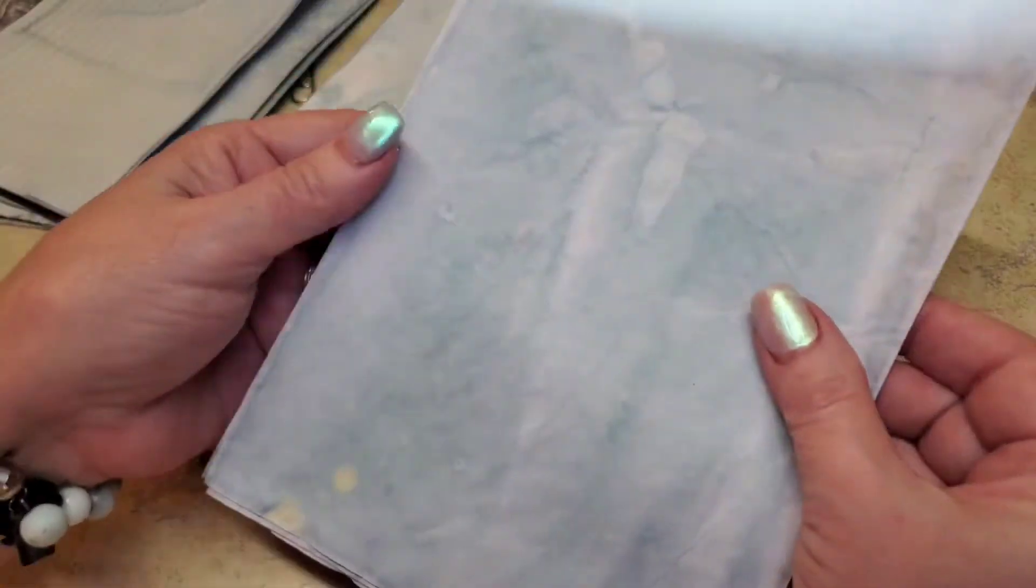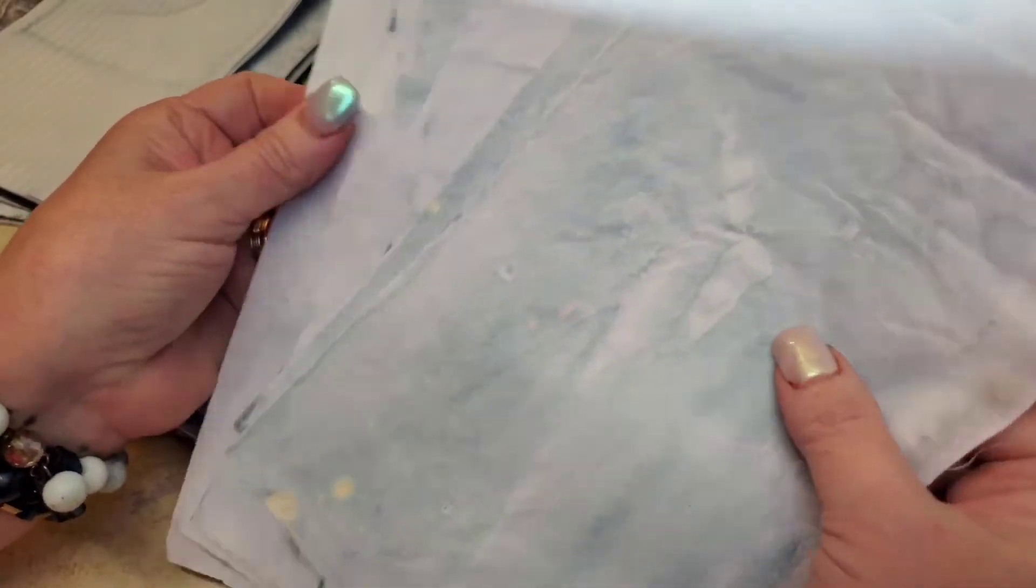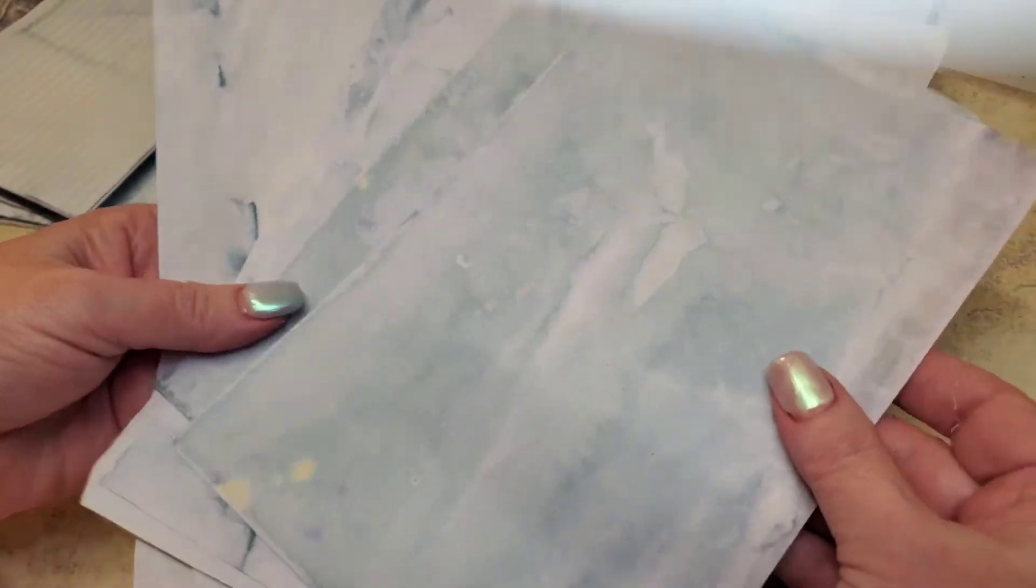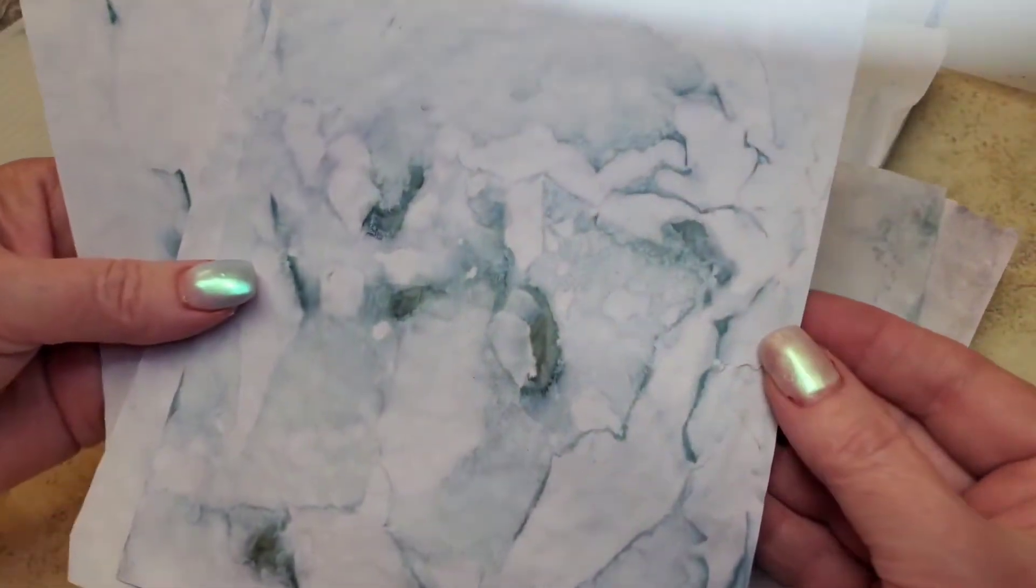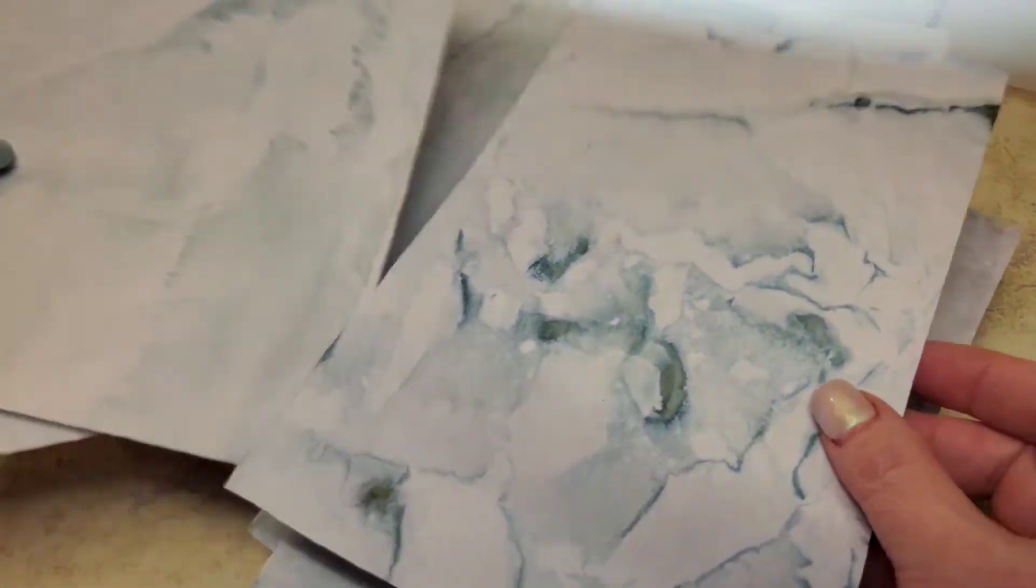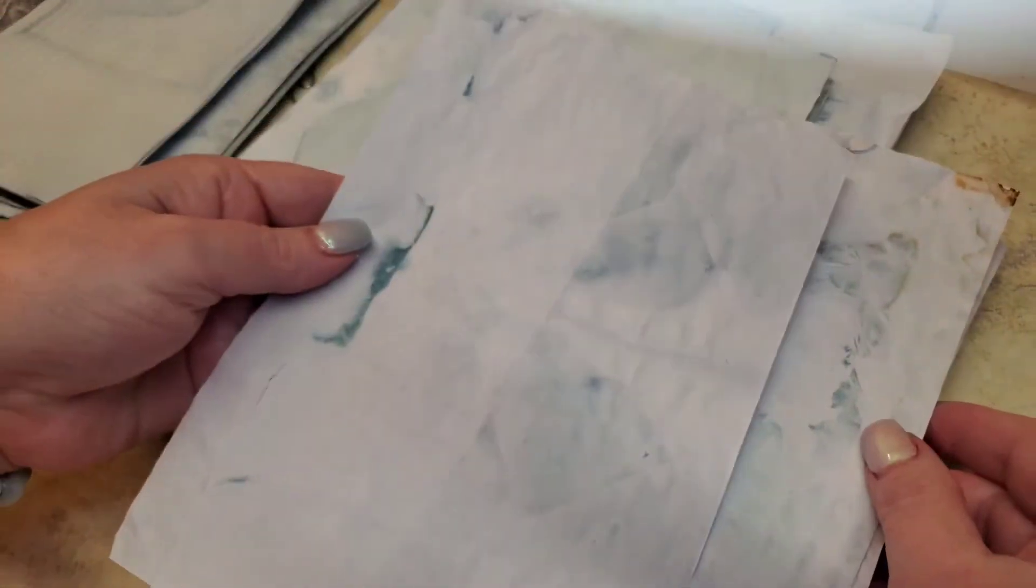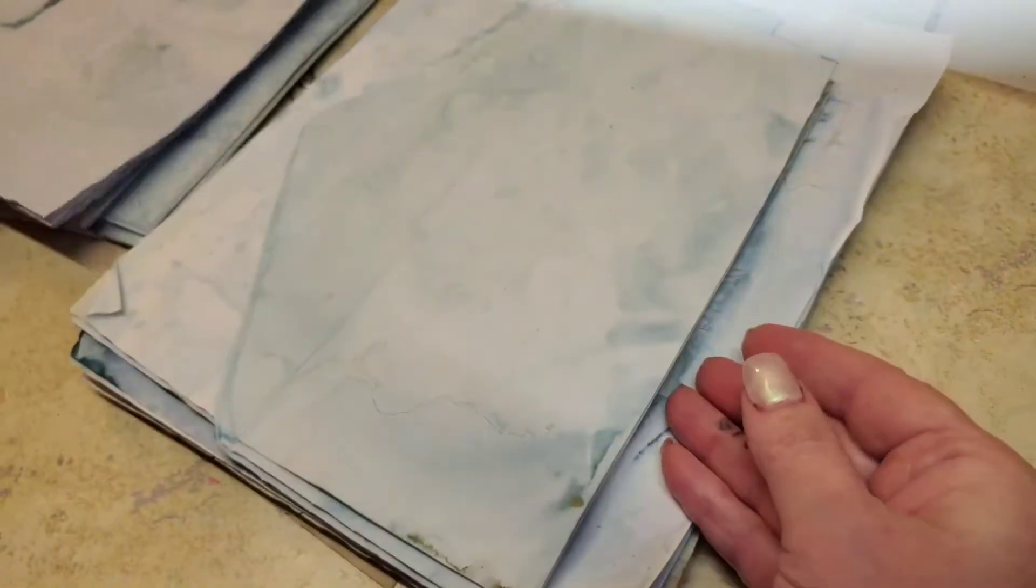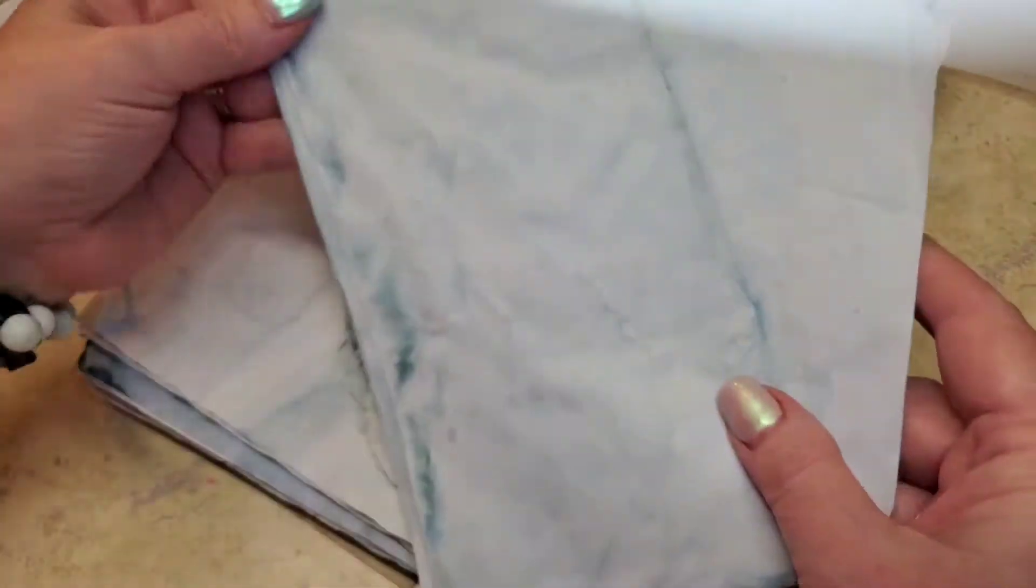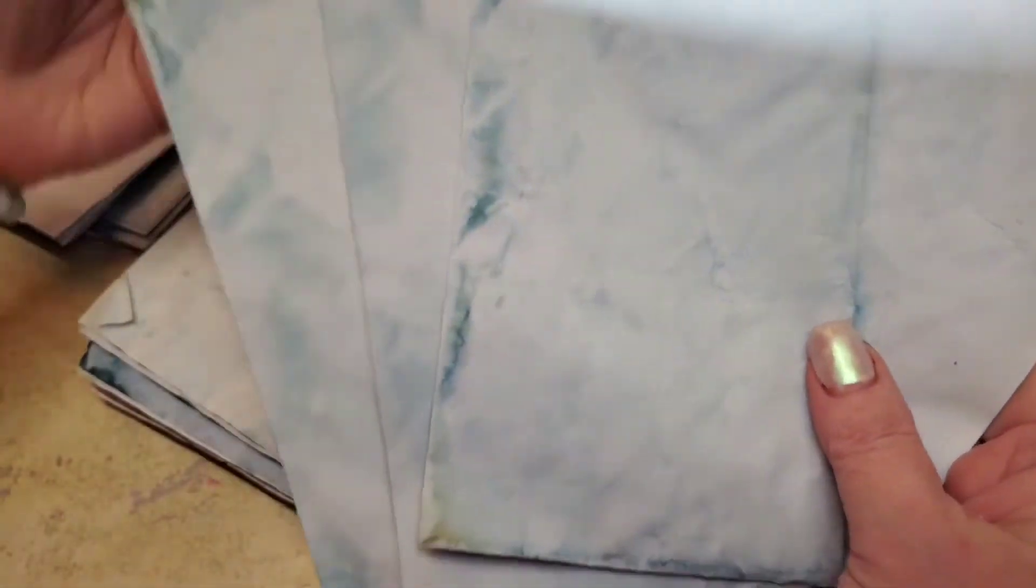And then you get five different, I call these writing tablets or writing tablet pages. You can get it on a writing pad, and you get five of those. And then you get three large envelopes.